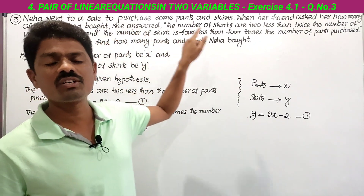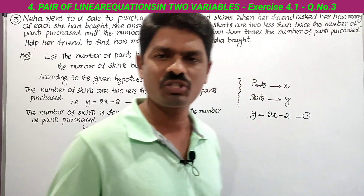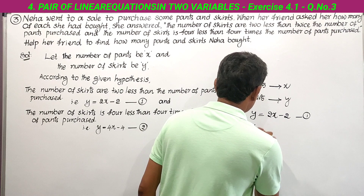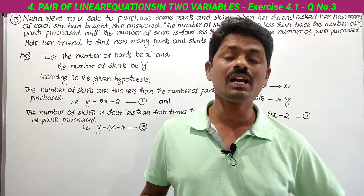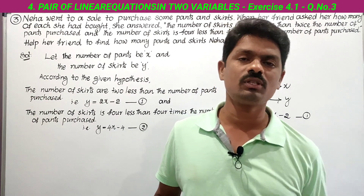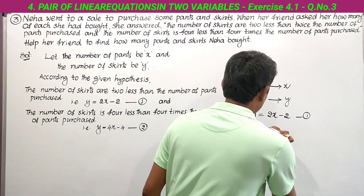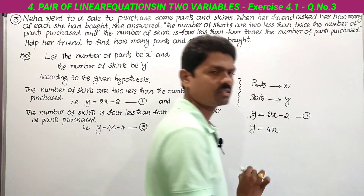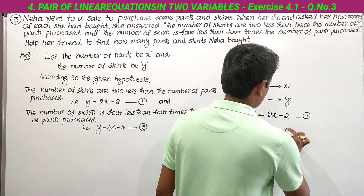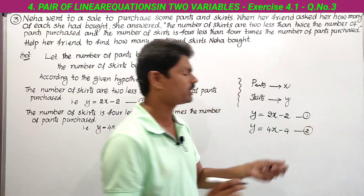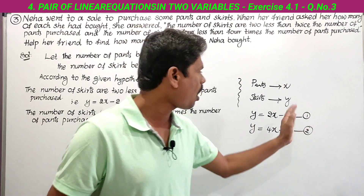He has given one more relation: the number of skirts is 4 less than 4 times the number of pants purchased. The number of skirts is y. Four times the number of pants is 4x. Four less than means we subtract 4. So y = 4x − 4. This is equation number 2.